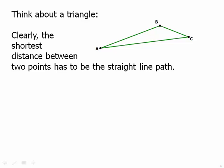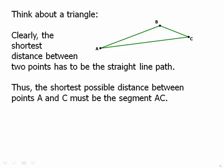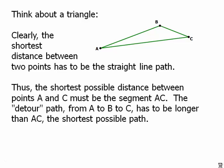The shortest distance between two points is always a straight line. Well, that means the shortest possible distance between point A and point C must be the segment AC. Because AC is a straight path between A and C.